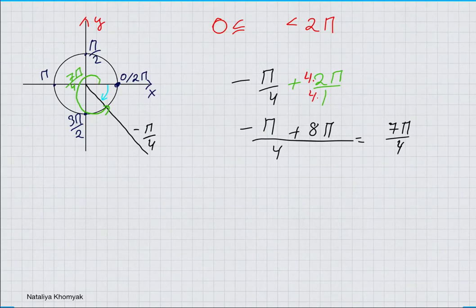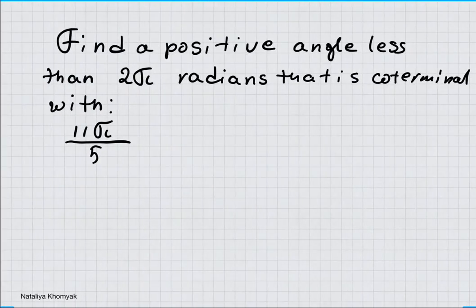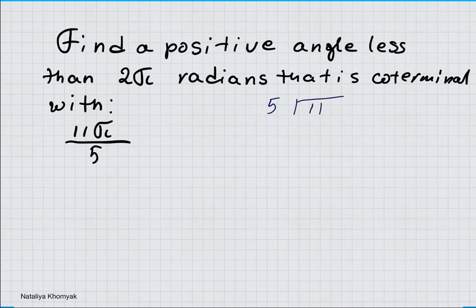Here we have to find a positive angle less than 2π radians that is coterminal with 11π/5. Now 5 goes into 11 two whole times, so minus 10, and we have a remainder.